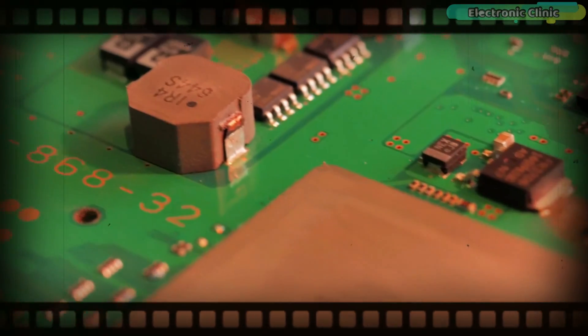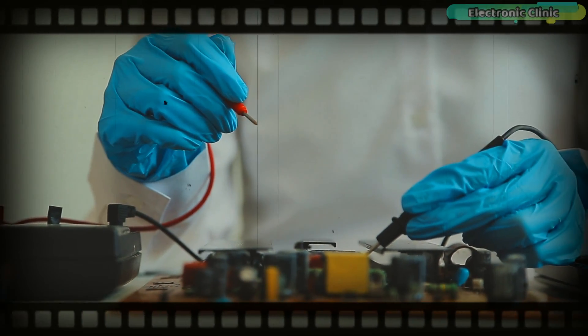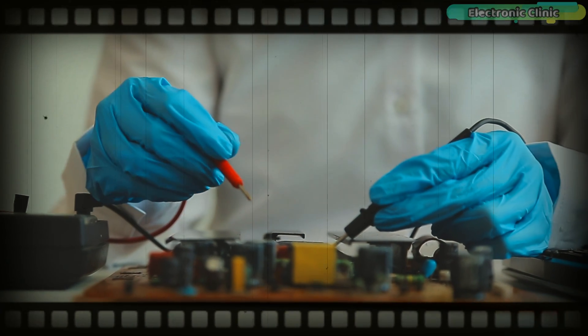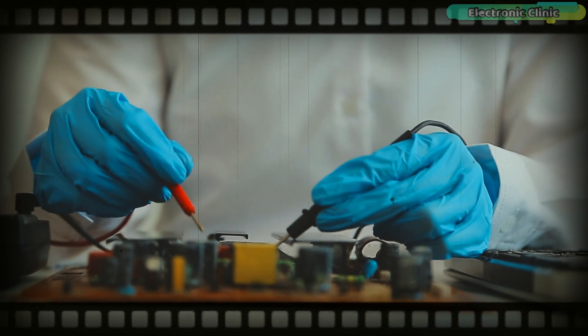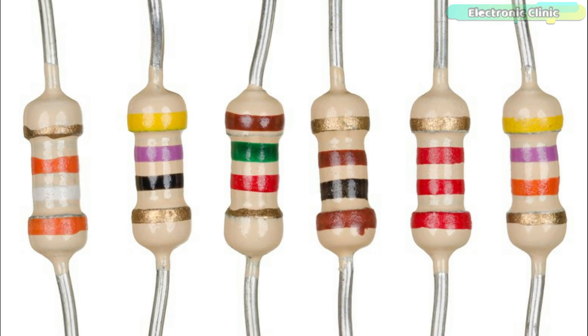Imagine you are exploring the world of electronics. You want to build cool gadgets and understand how they work. One of the first things you want to understand when learning electronics is the resistor color codes.